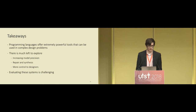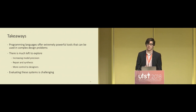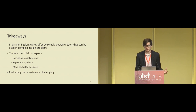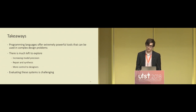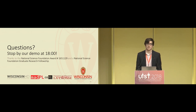There is much left to explore. We can increase model precision by incorporating probability and continuous time. We can incorporate programmatic repair and synthesis — automatically fixing social norm violations or building interactions from scratch. We can also afford more control to designers by letting them specify their own social norms. Finally, evaluating these systems is challenging and time-consuming, so we're building an online version of this tool to get it into people's hands more quickly. I'll take questions now, and you can also stop by my demo at 6 o'clock tonight.